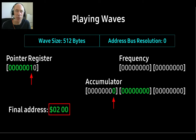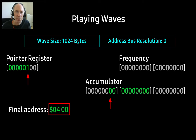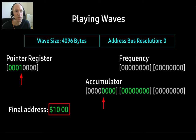When we set the wave size to 512 bytes, the pointer register loses one bit and the missing bit is now taken from the accumulator. Notice that the address can no longer be on any page — it must be aligned on a 512-byte boundary. That's an important constraint to keep in mind. For 1024-byte waves, the boundary is also 1024, and so on up until 32K.